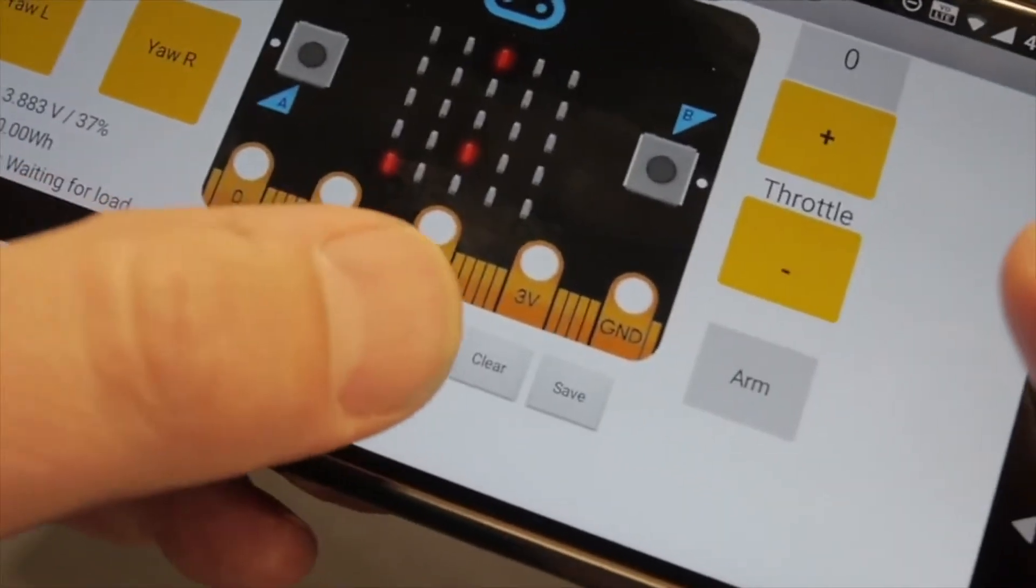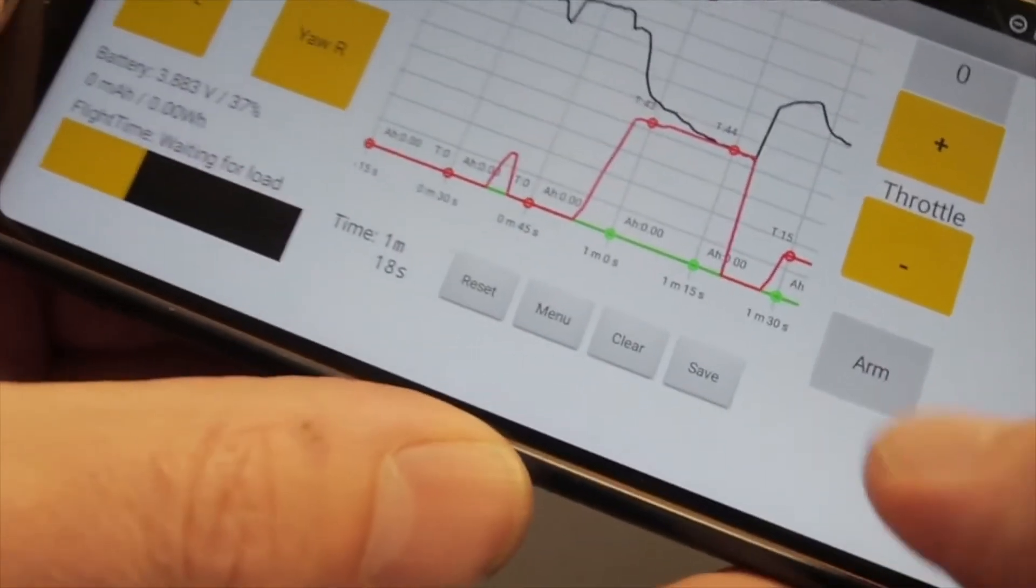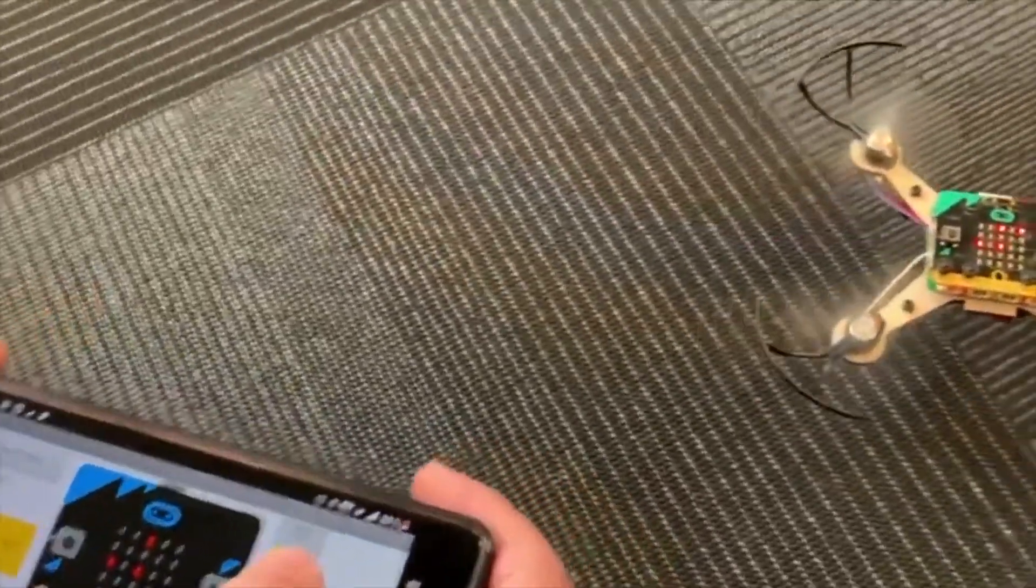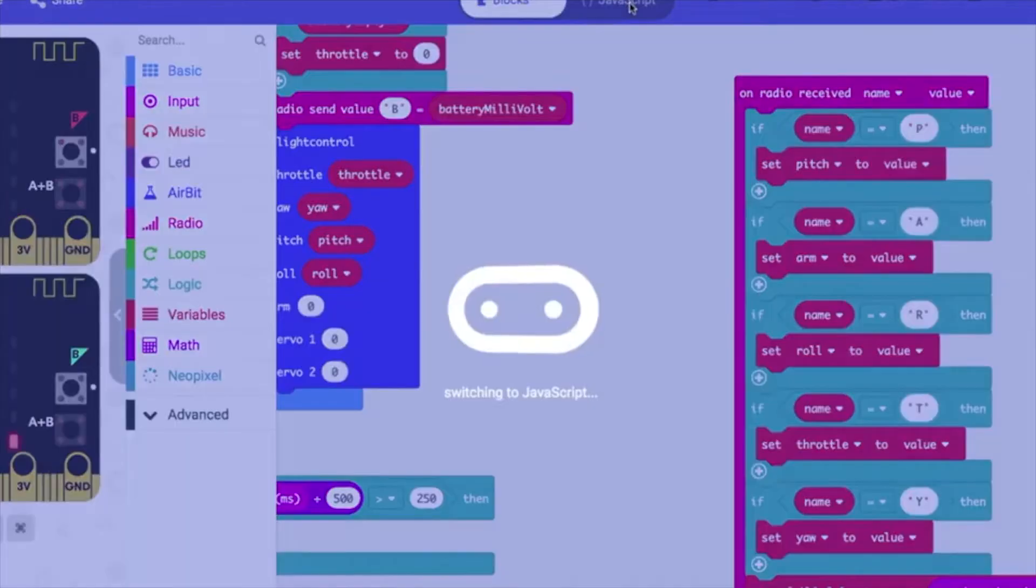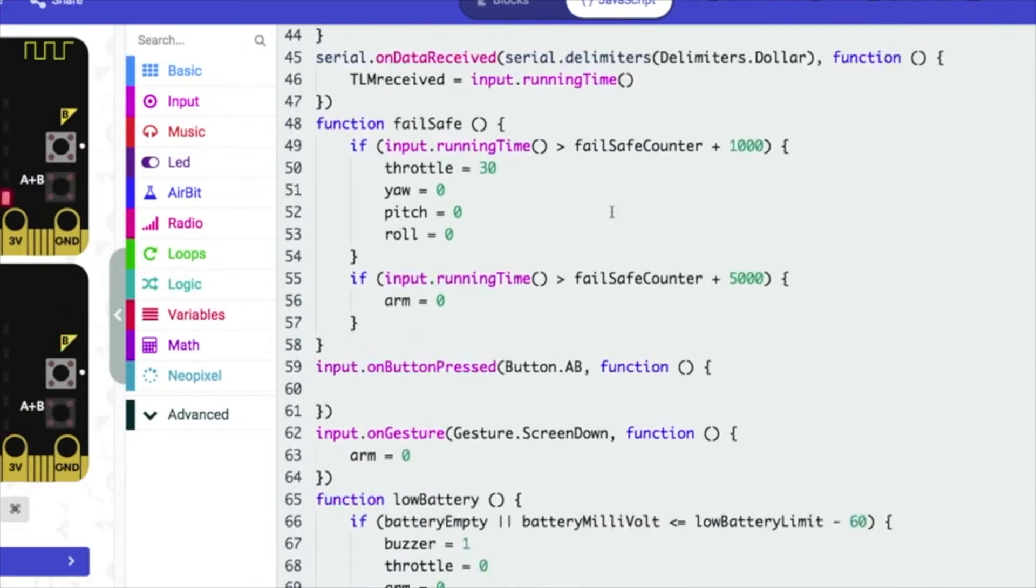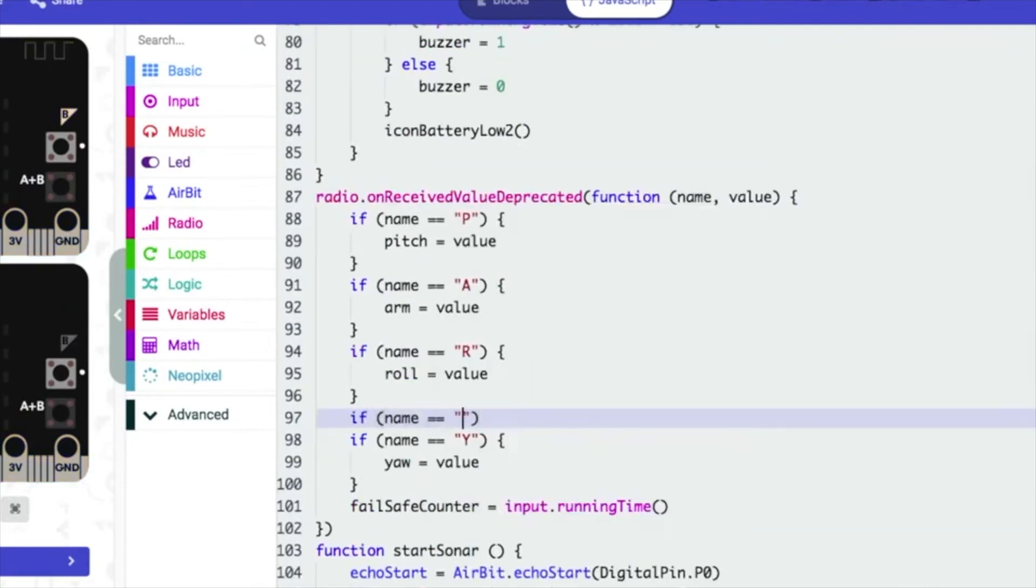Use our app to control and collect data such as battery voltage, acceleration, or temperature. Advanced users can also use JavaScript or Python to change the drone's code.